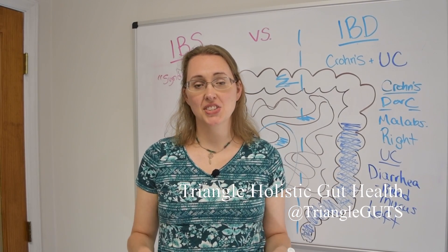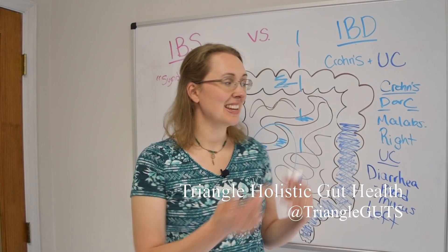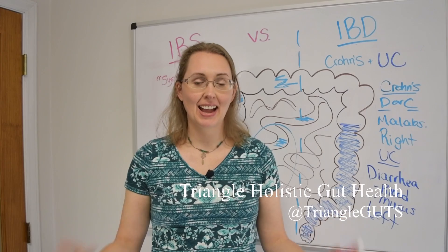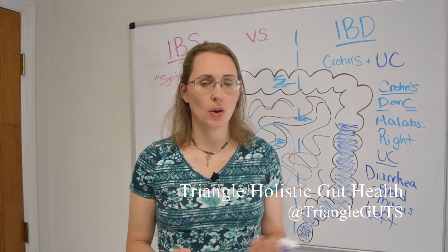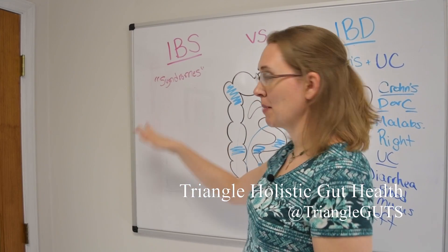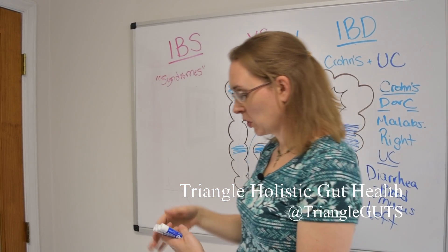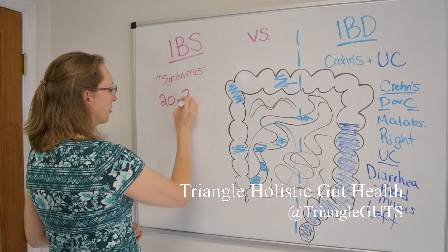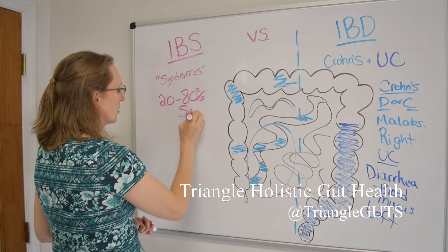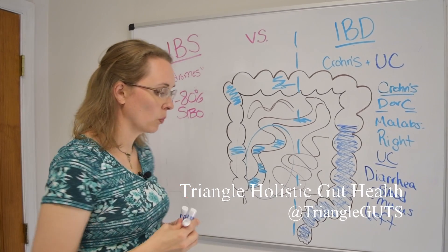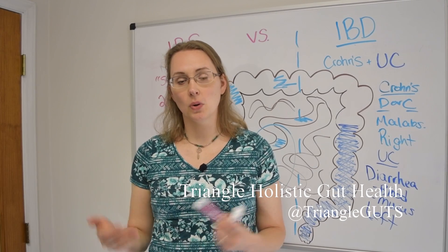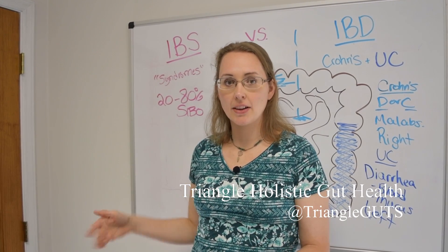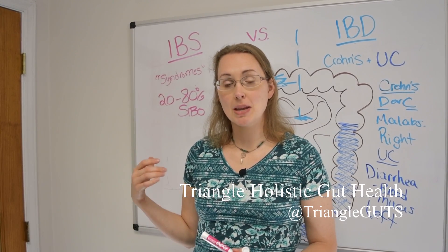It's also worth noting that small intestinal bacterial overgrowth, or SIBO, is not uncommon in any of these conditions. As you're picking apart your root causes and looking for answers, SIBO should be on your radar. With IBS, different studies say different things, but I've seen a range of about 20% up to close to 80% for the rate of SIBO — depending on what methodology they use, what kind of breath test, or whether they did a jejunal or duodenal aspirate. Rates of SIBO in IBS populations are staggeringly high, so if you have IBS or these symptoms, definitely rule out SIBO as a cause.